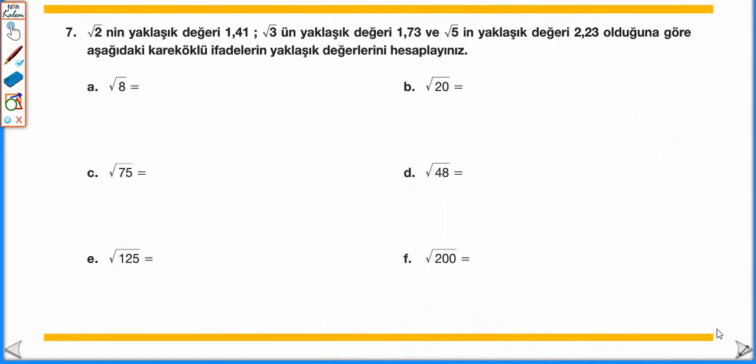Kare kök 2'nin yaklaşık değeri 1,41; √3'ün yaklaşık değeri 1,73; √5'in yaklaşık değeri 2,23 olduğuna göre aşağıdaki kare köklü ifadelerin yaklaşık değerlerini buluruz. Kare köklü ifadelerin yaklaşık değerlerini bulmak için, verilen sayıları A√B şeklinde yazarız; kök B ifadesi kök 2, kök 3 veya kök 5'ten biri olduğunda, yerine yaklaşık değerlerini yazıp kat sayı ile çarparız. √20 = 2√5 olduğundan, 2 × 2,23 = 4,46 olarak bulunur.